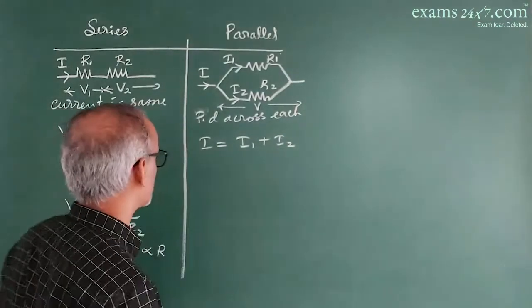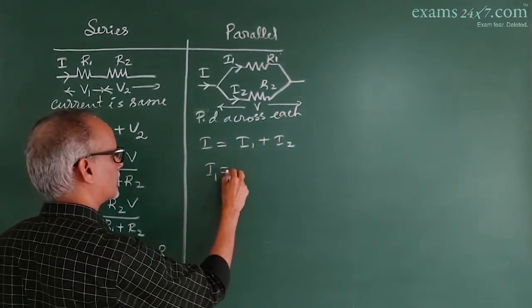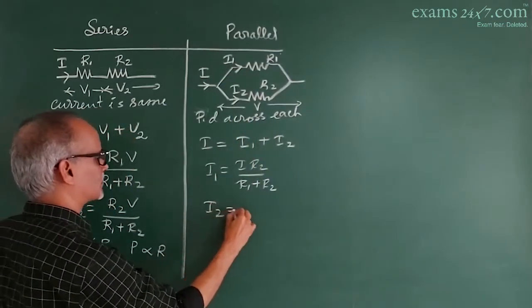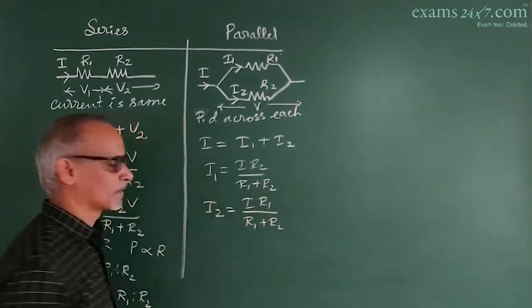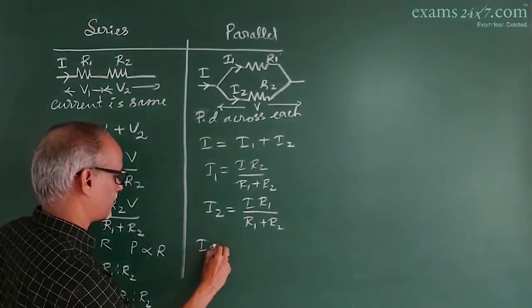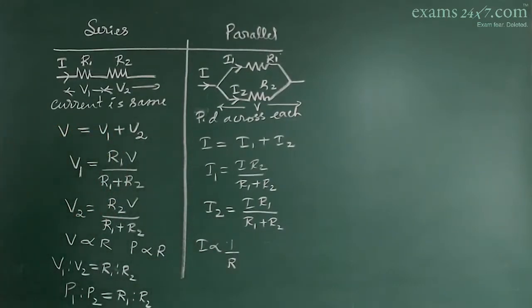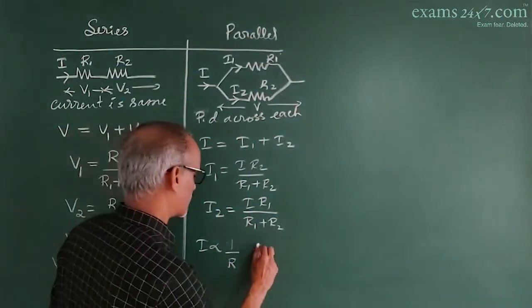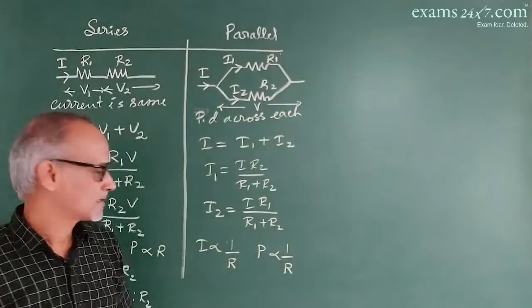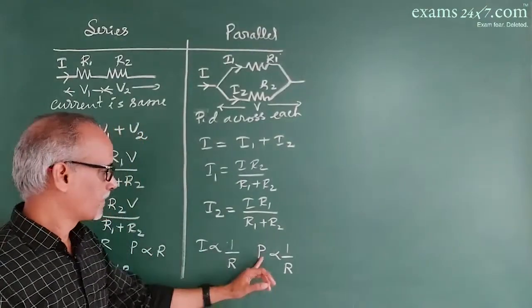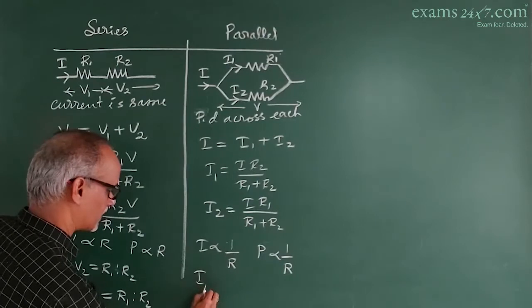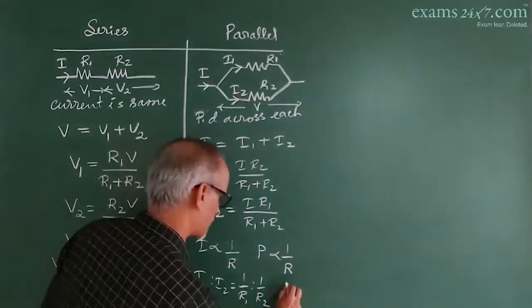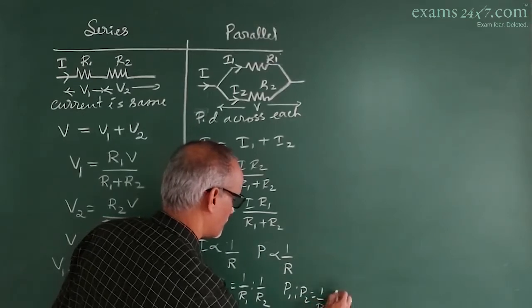In parallel combination, the branch currents are I1 equals I·R2 divided by R1 plus R2, and I2 equals I·R1 divided by R1 plus R2. Current is inversely proportional to resistance since V is the same. Similarly, power consumed is inversely proportional to R since P equals V²/R and V is the same. So I1 to I2 equals 1/R1 to 1/R2, and P1 to P2 equals 1/R1 to 1/R2.